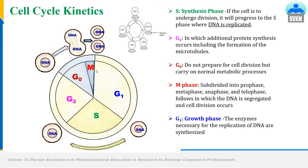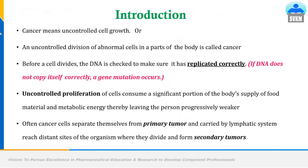These are the cell cycle kinetics. Without cell cycle kinetics, a cell cannot divide and proliferate, and that is very important to understand before discussing cancer. Cancer means uncontrolled cell growth or uncontrolled division of abnormal cells in parts of the body. In simple language, cancer is defined as uncontrolled cell division and cell proliferation.